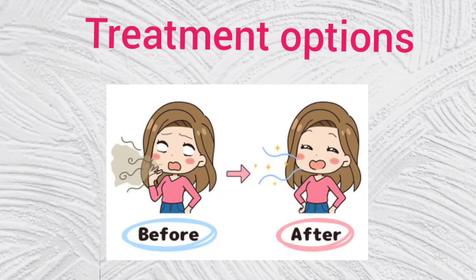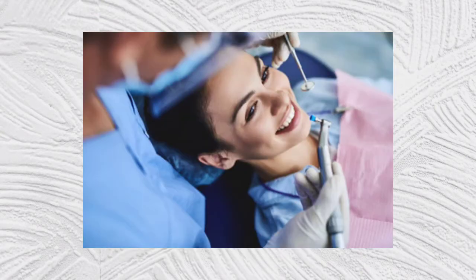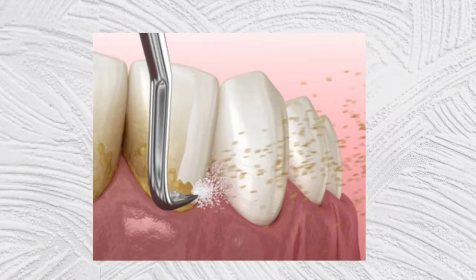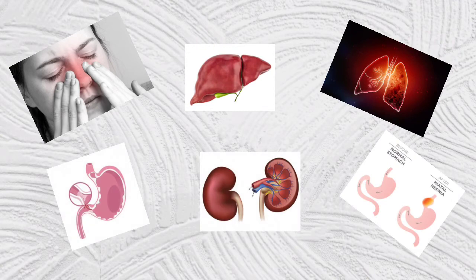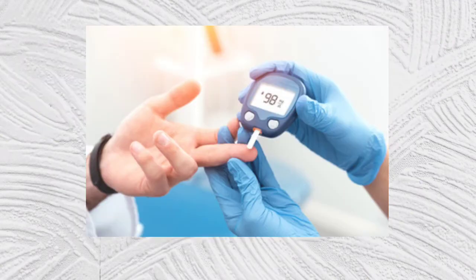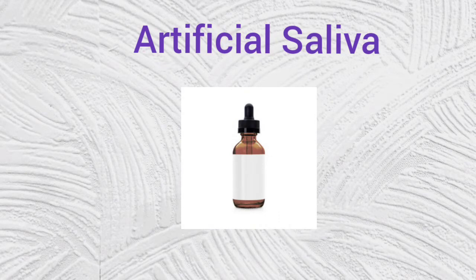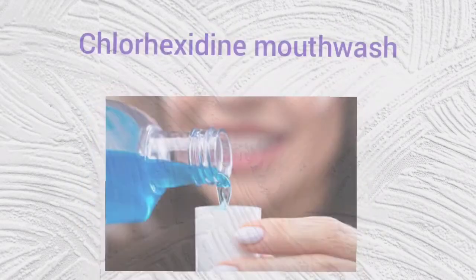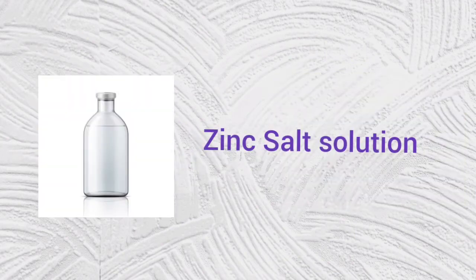For treatment of bad breath: if it is due to plaque buildup, a dental cleaning may solve the problem. A deep dental cleaning may be necessary if you have periodontal disease. Treating underlying medical problems can also help improve breath odor, such as controlling your blood sugar level. Artificial saliva may be prescribed if patients have dry mouth. Use of chlorhexidine mouthwash, baking soda-containing toothpaste, and zinc salt solution can also reduce bad breath.